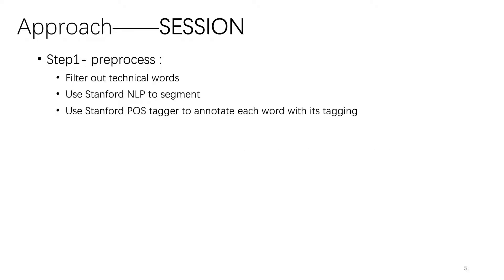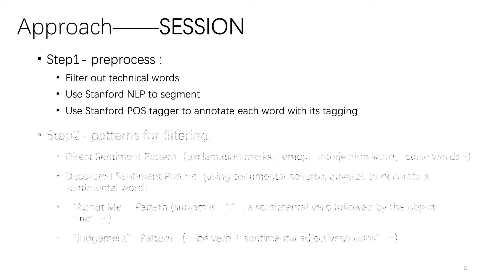Step 1: Pre-processing. In this step, we filter out technical words, use NLP tools to segment the text, and use POS taggers to annotate each word with its part-of-speech tag.